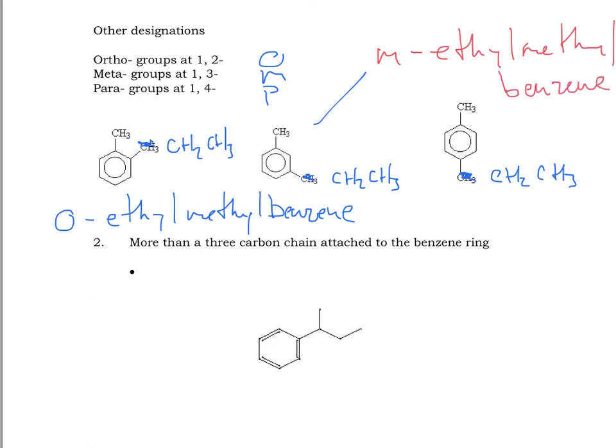And the last one here is going to be para, so P. It just sort of saves you writing a little bit of numbers and dashes. So, something to be aware of. Either system is right. So, I could have also named this 1-ethyl-2-methylbenzene or 1-3 or 1-4, but it's just quicker.